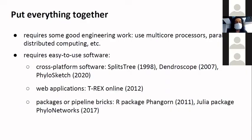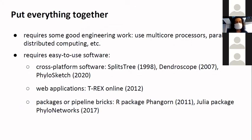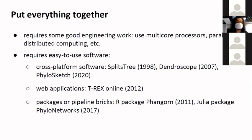In the end, you will have to put everything together. This will require good engineering work — for example, using distributed algorithms and parallel computing — but also making nice software. Our colleagues in bioinformatics and biology appreciate when we think of them when building software. We have the example of the Tübingen group of Daniel Huson with SplitsTree, Dendroscope, and the new PhylogenSketch to draw those networks. We have also web applications like TRx developed in Montreal — very easy to use — and packages for R and Julia. So finally, you can keep calm and build your phylogenetic networks through all of this.